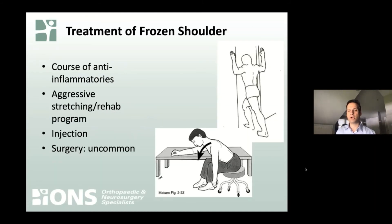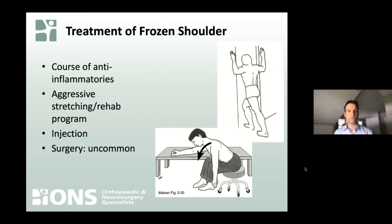How do we treat frozen shoulder? Luckily, we rarely need surgery for this. But there isn't anything that can make it go away overnight, so it will involve a lot of stretching and rehab. I would recommend a course of two to three weeks of a strong anti-inflammatory, taken as directed, as long as it's not irritating your stomach. We will often consider a steroid shot to jump-start things and get that shoulder loosened up.